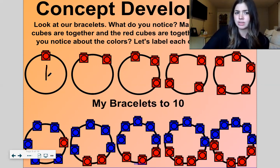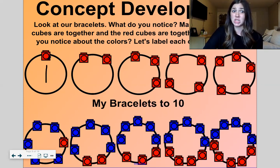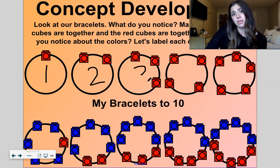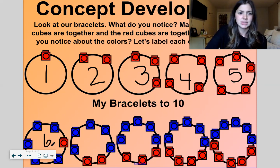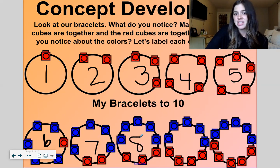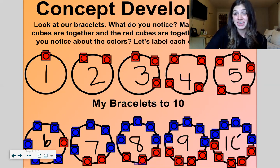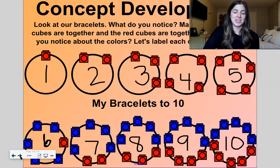Now let's label each one. Labeling means to match a set with a number. So we have one, two, three, four, five, six. Oh, that's a silly six, isn't it? Six, seven, eight, nine. And then remember ten has two digits. Ten. There we go.